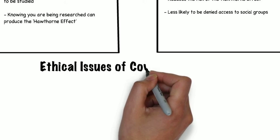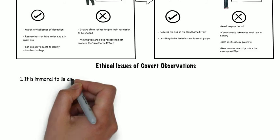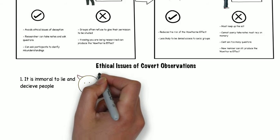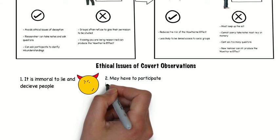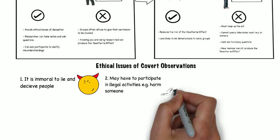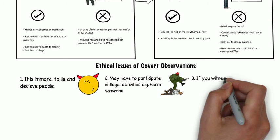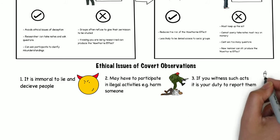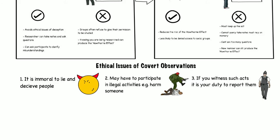There are also a lot of ethical issues with covert observations. First, it is immoral to lie and deceive people, and most research organizations require researchers to gain fully informed consent. Second, researchers may have to participate in immoral or illegal activities to remain undercover, which could even include causing harm to others when researching criminal groups. Finally, if a researcher witnesses such acts, they have a moral and legal obligation to intervene or report them to the police, and some may not want to do this as it will ruin their research.